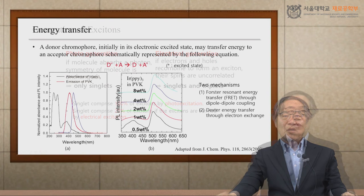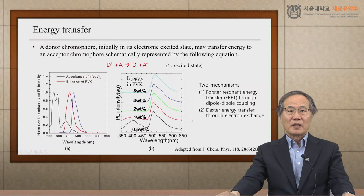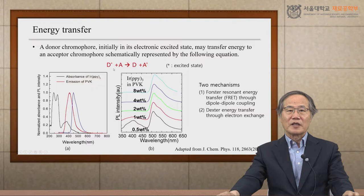One more process we have to consider in organic semiconductors is called energy transfer. Let's consider the case where there are two different molecules — one is the donor and the other is the acceptor. If the donor is excited and a neighboring molecule A is nearby, and if proper conditions are satisfied, then the energy of the donor excited state is transferred to the acceptor, resulting in a ground state donor and an excited acceptor state. This is called the energy transfer process.